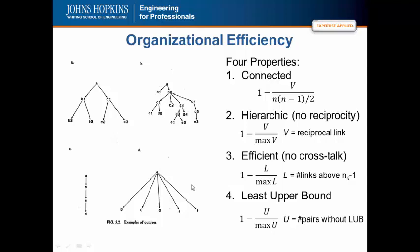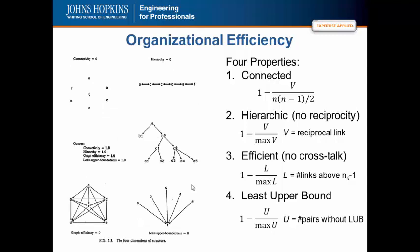Here are examples where connectivity, hierarchy, graph efficiency, and least upper boundedness are zero at one extreme. In the middle is the out-tree archetype, where connectivity is 1, hierarchy is 1, graph efficiency is 1, and least upper boundedness is 1 — representing the ideal fully efficient organizational network structure. In reality, the four properties all reach their maximum values simultaneously in a perfectly efficient hierarchy.